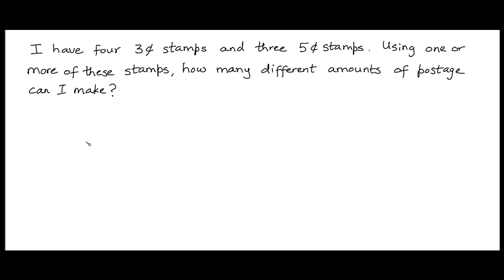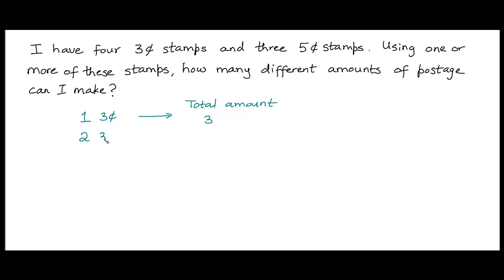Let's first play with a few examples of how this works. I'm given four three-cent stamps. If I used just one three-cent stamp, the total amount I would be paying for postage would be three cents. If I used two of those three-cent stamps, the total amount of postage would be six cents.